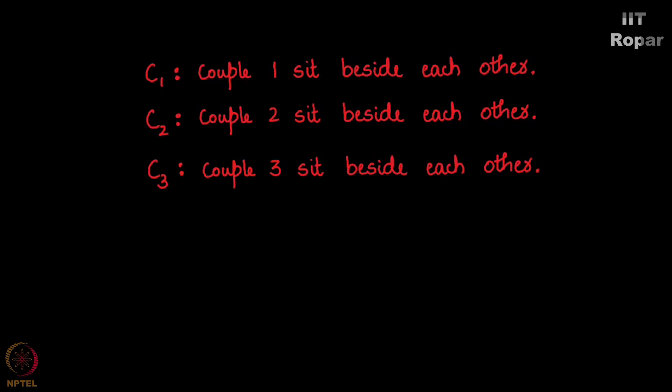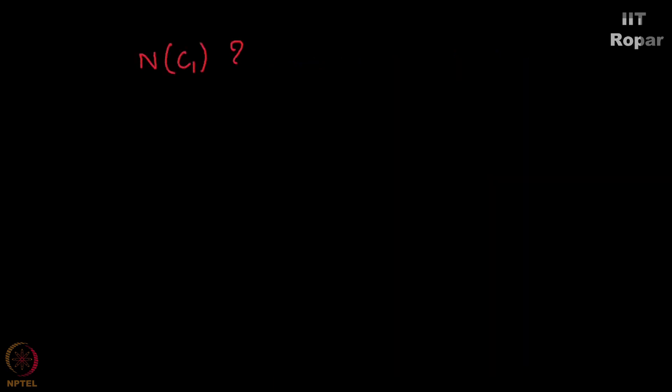Now the conditions are done. The next question is what is N of C1? N of C1 are those permutations where couple 1 are sitting beside each other. We don't know anything about couple 2 and couple 3.